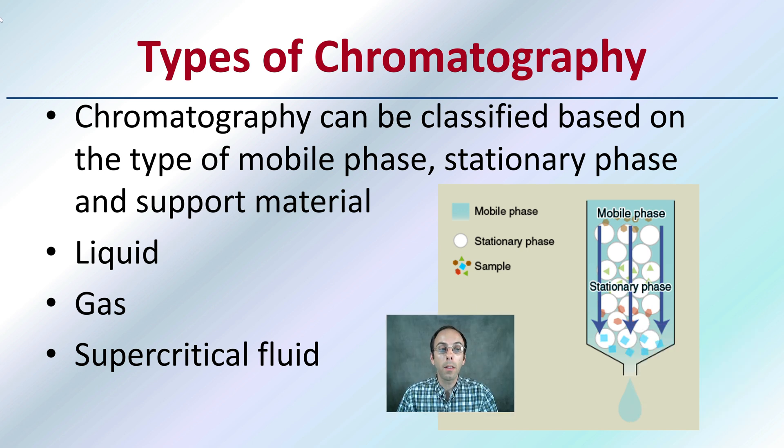Chromatography in general can be classified based on the type of mobile phase, stationary phase, and supporting material. It could be liquid chromatography, gas chromatography, or supercritical chromatography if you're using a supercritical fluid as an example.